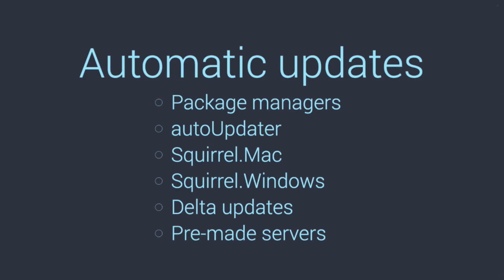There's a built-in auto-updater module and it's really simple. Once you instantiate it with a URL pointing to your update server, you call a checkForUpdates method. It's event-driven — it fires events like update-downloaded, update-ready. Once the update-downloaded event fires, you call the restartAndInstall method, it restarts your app and updates. You can hook that into your UI any way you want — have a button to check for updates, let the user know, and they can click install. You don't want to interrupt them and force install.